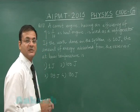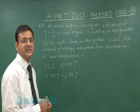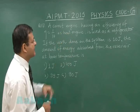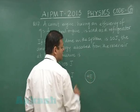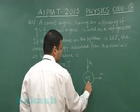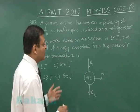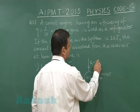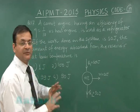Question 117 is based on the second law of thermodynamics, combining knowledge of heat engines and refrigerators. A Carnot engine with efficiency eta = 1/10 is used as a refrigerator. As a heat engine, it takes heat input Q1, gives work output, and rejects some heat — at higher and lower temperature reservoirs respectively. If work output is 10 joules, efficiency gives Q1 as 100 joules and 90 joules is rejected.